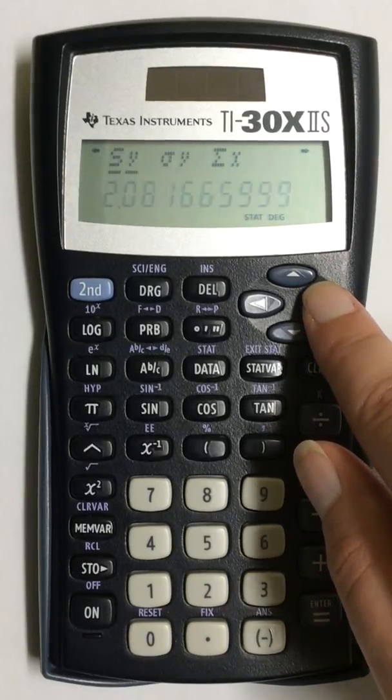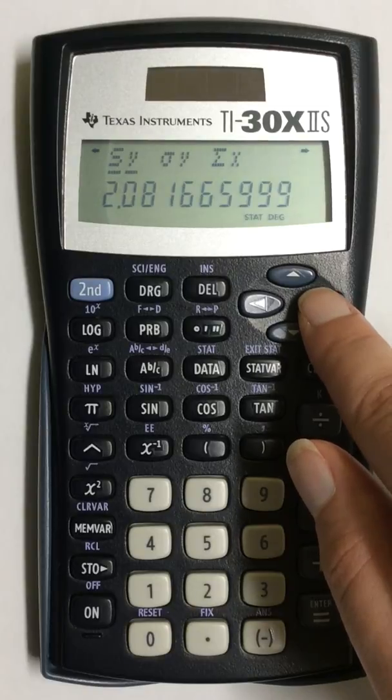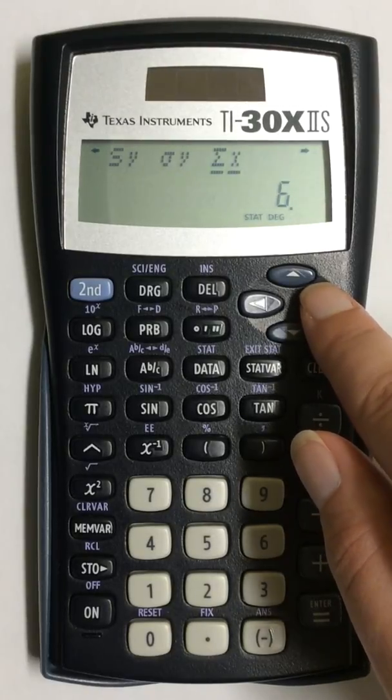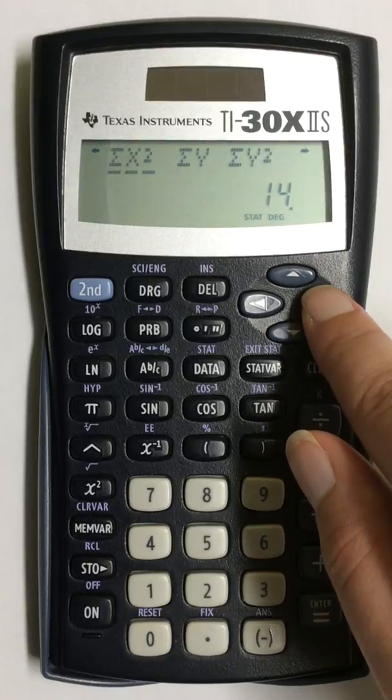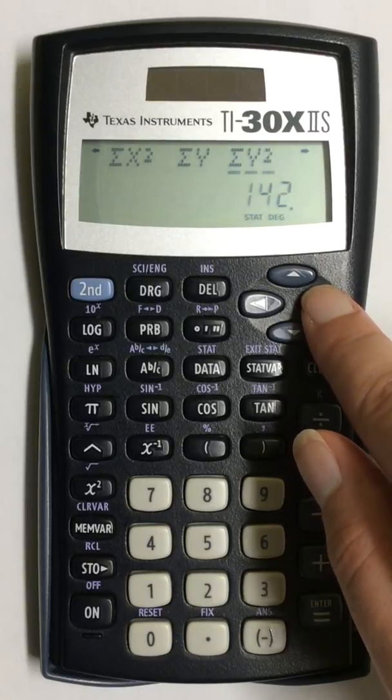If I keep going over to the right, it keeps giving me different values. And if I keep going even farther...